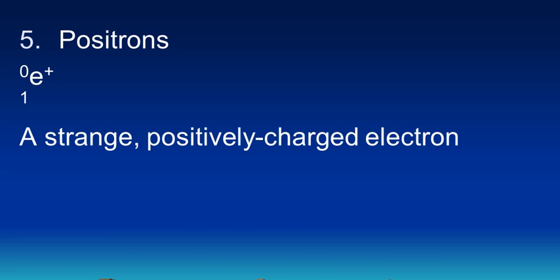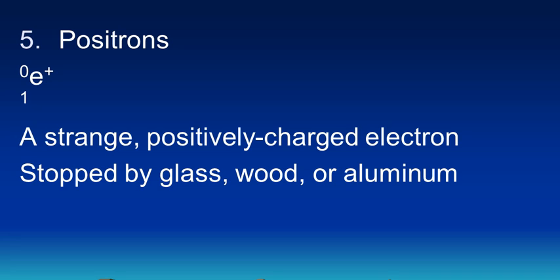The fifth and final type of ionizing radiation is positrons. The symbol is 0 over +1, E+. Its mass number is 0, so it doesn't include any protons or neutrons. Its charge is +1, positively charged, and it has the symbol E. That sounds like it's an electron, and it is, but this is an unusual electron, a positively charged electron. This is basically a beta particle with a positive charge. It's stopped by glass, wood, or aluminum, just like a beta particle would, but it has the opposite charge. In this lesson, we've talked about these five types of ionizing radiation: alpha particles, beta particles, gamma rays, neutrons, and positrons.